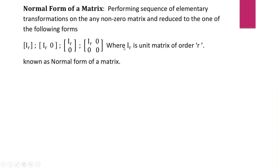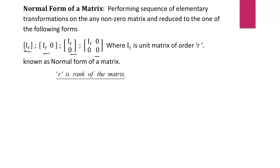The normal form of a matrix is obtained by performing a sequence of elementary transformations on any non-zero matrix, reducing it to one of the following forms — known as the normal form of the matrix. It may involve row transformations or column transformations. Applying these elementary transformations, we reduce the matrix to the identity matrix, where the suffix denotes the order of that identity matrix, and R is the rank of that matrix.